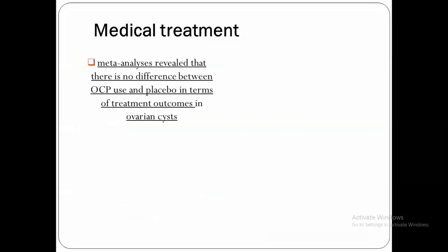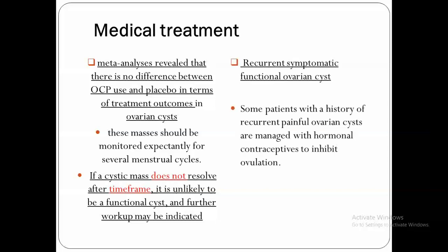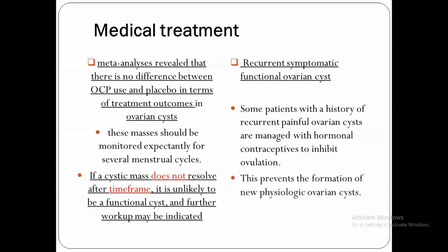Regarding medical treatment: meta-analysis revealed no difference between using oral contraceptive pills or not. We only need to follow patients for a certain period, and most guidelines say up to one year. For recurrent symptomatic ovarian cysts, good practice points suggest some patients with a history of recurrent painful ovarian cysts are managed with hormonal contraception to inhibit ovulation and prevent the formation of new physiological ovarian cysts.